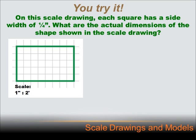On this scale drawing, each square has a side width of 1 quarter inch. In other words, that's 1 quarter inch, that's 1 quarter inch, that's 1 quarter inch, and that's 1 quarter inch. What are the actual dimensions of the shape shown in the scale drawing? We know it's drawn to scale, and here's the scale they drew it with. Now all we've got to figure out is what that length represents, and what that length represents.